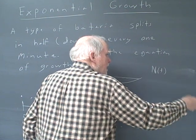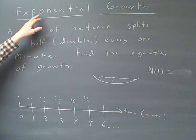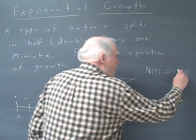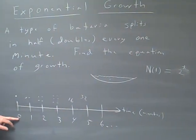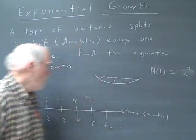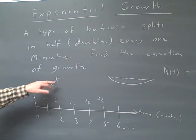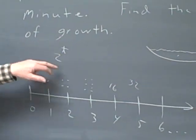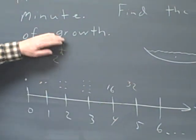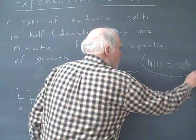Finally, an enterprising student will say, well, we're doing exponential growth — maybe it's two to the t power. We'll try 2^t and see if that works. Put zero into 2^t: anything to the zero power is one, so it gives us one — it works there. Put one in, we get two. Put two in, we get four. Put three in, we get eight. By gosh, it works. So there is our equation: the number at any time t equals 2^t.